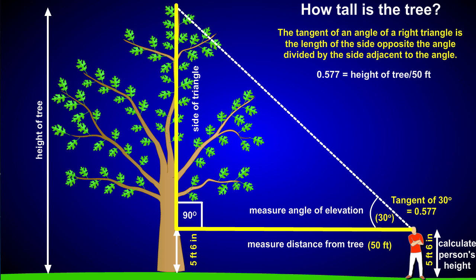0.577 equals the height of the tree divided by 50 feet. Multiply each side of the equation by the distance from the tree — 50 feet — and you can determine the height of the tree. In this case, the height of the tree equals 28.9 feet.